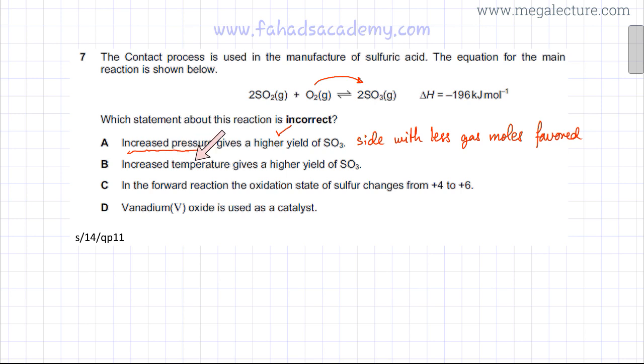If you look at the next statement, increased temperature gives a higher yield of SO₃. Now if you increase temperature, endothermic reactions are favored because they need energy. So if by increasing temperature you are giving it energy, endothermic is favored.